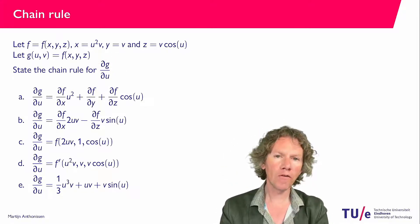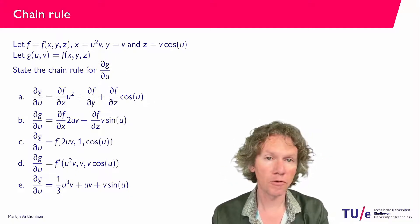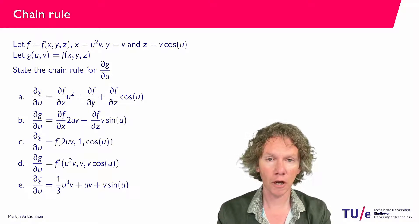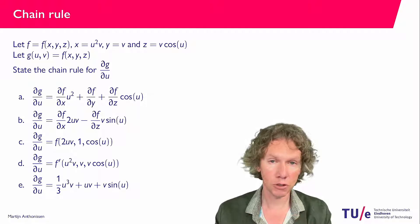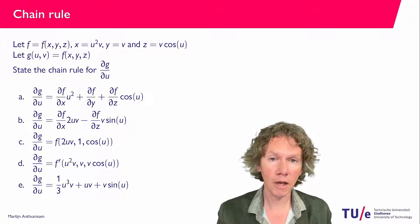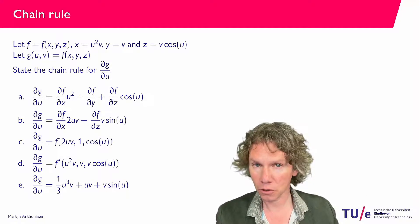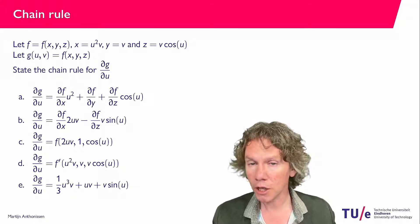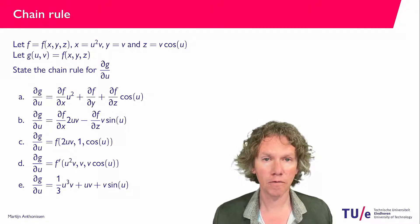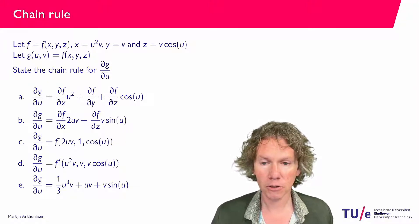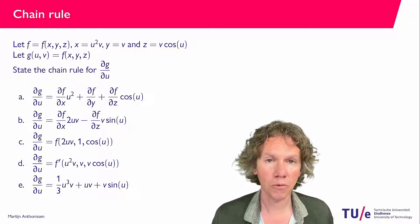As you may recall from functions of one variable, if you differentiate, for instance, sine of x squared, then you differentiate first sine, which gives cosine of x squared, and then with the chain rule you get an additional 2x. So here we have the equivalent for a function of several variables, and we are being asked to find what this chain rule is.